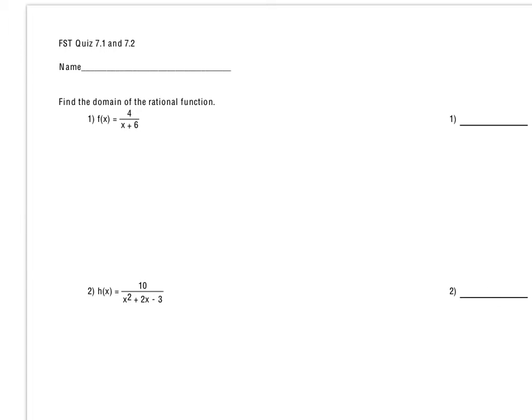For number 1, the denominator being x plus 6, the trouble with our domain is that the denominator cannot equal 0. So in this case, x plus 6 cannot equal 0. If we solve that, we subtract 6 from both sides. So x cannot equal negative 6. That would be the description for the domain.